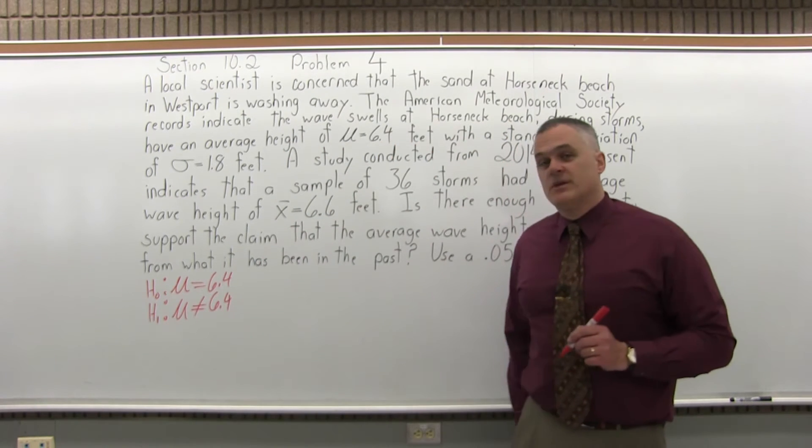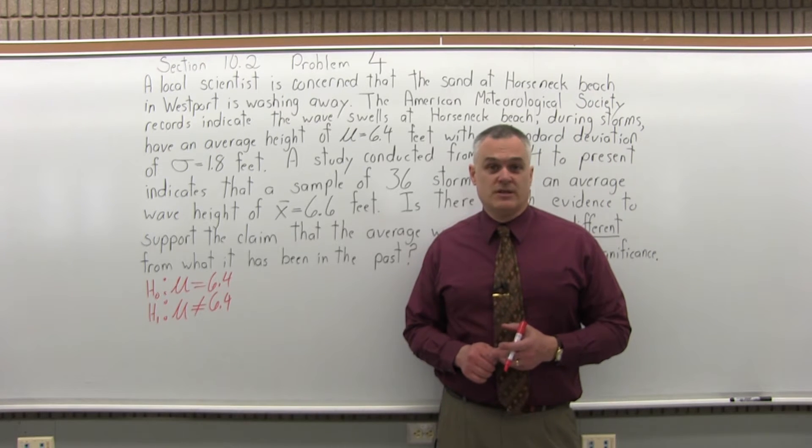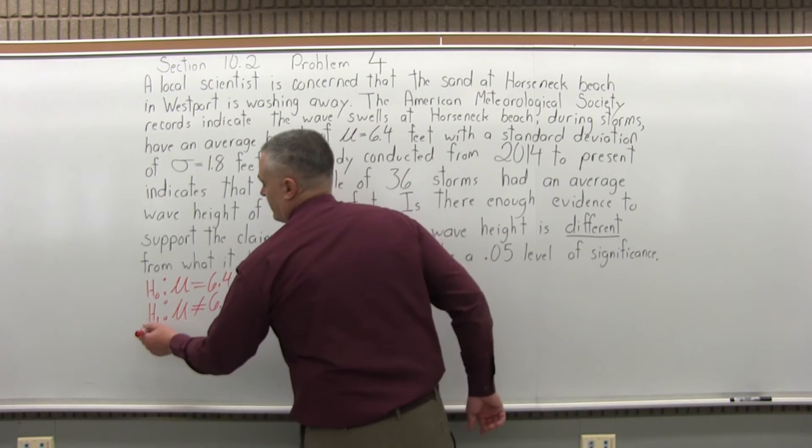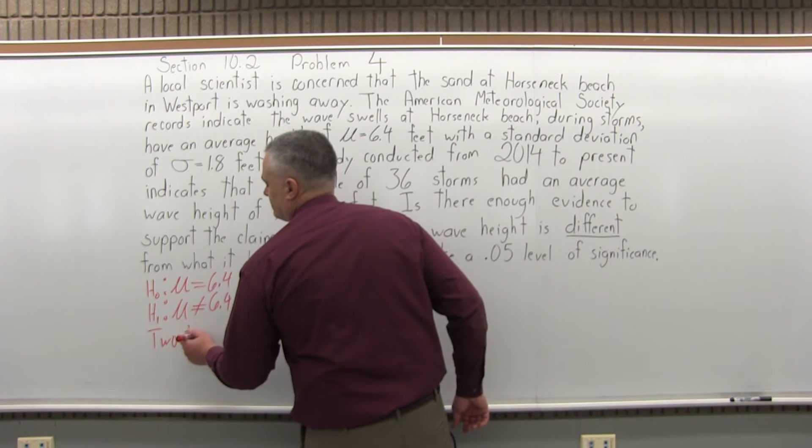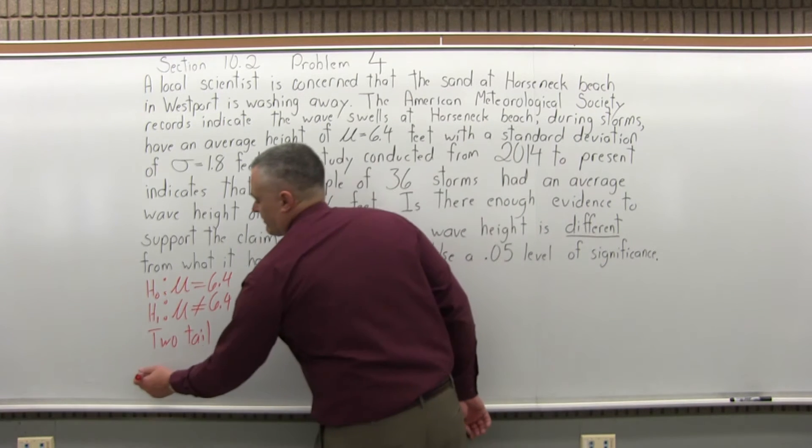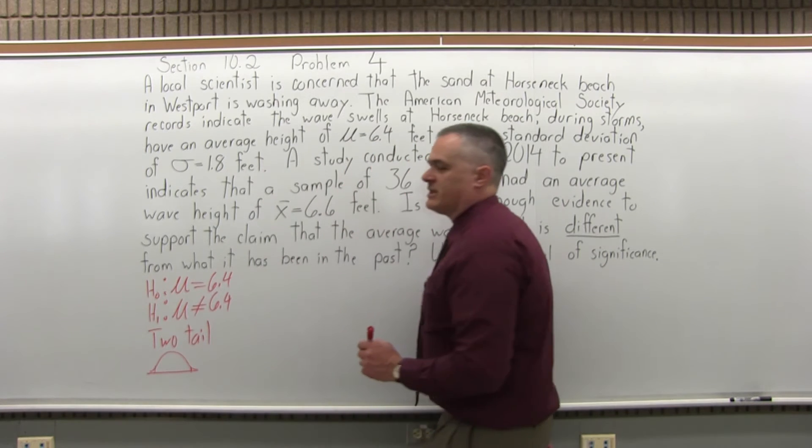And the third step is determine what type of test you have. It could be a left-tail test, right-tail test, or two-tail test. Well, not equal to is the two-tail. And two-tail means you have a critical region in both ends, left and right. And we'll get to that as we get to step six.